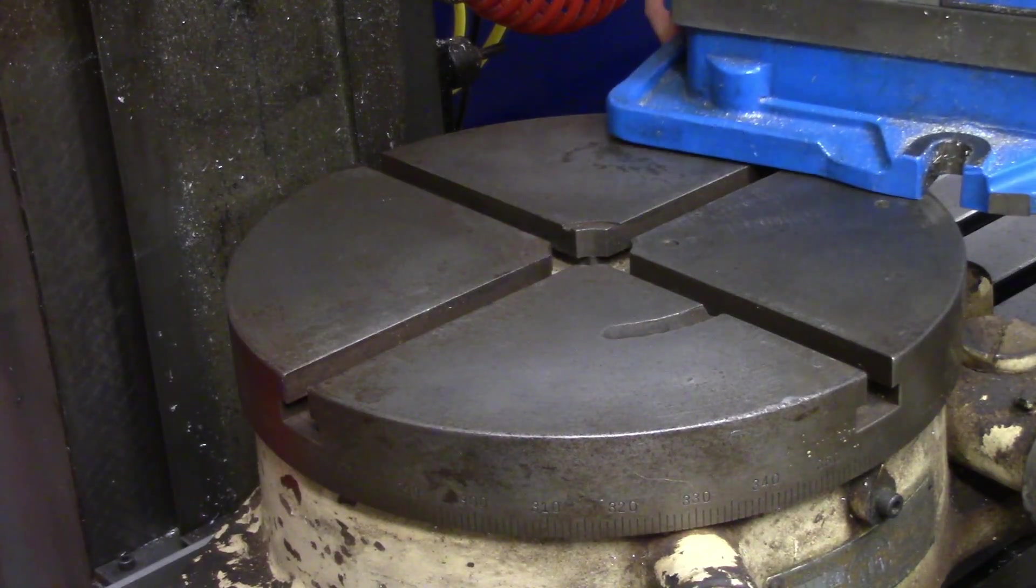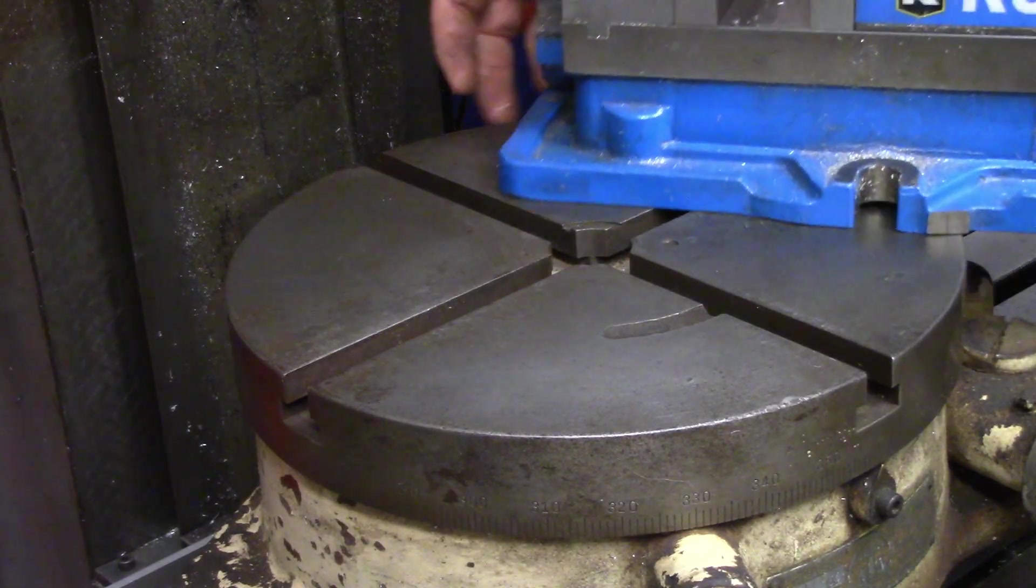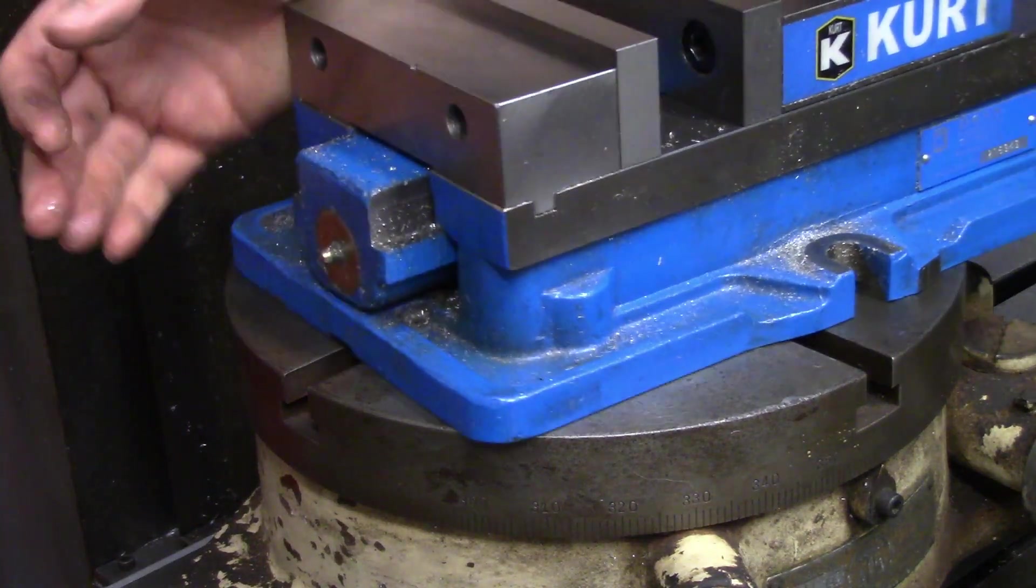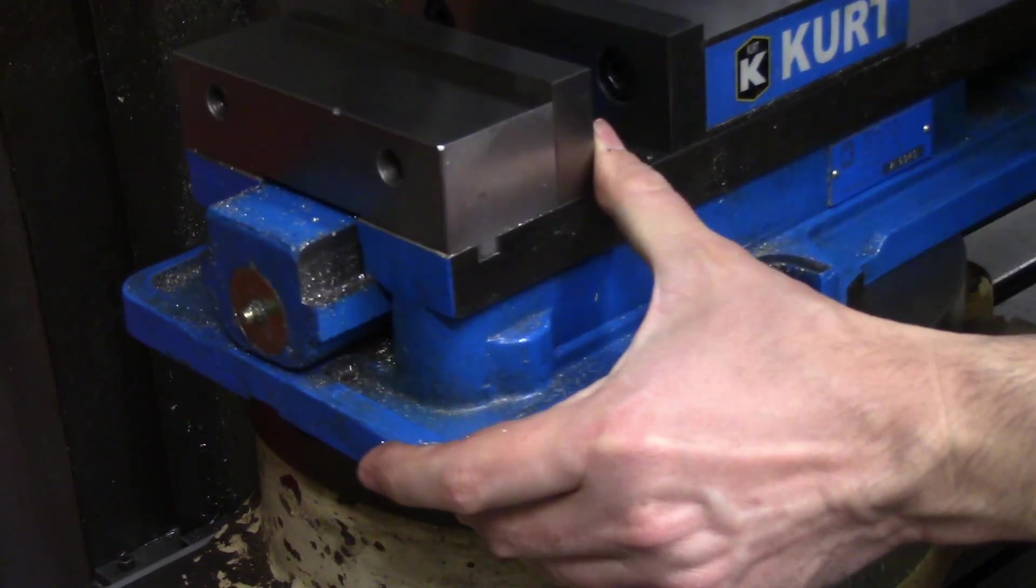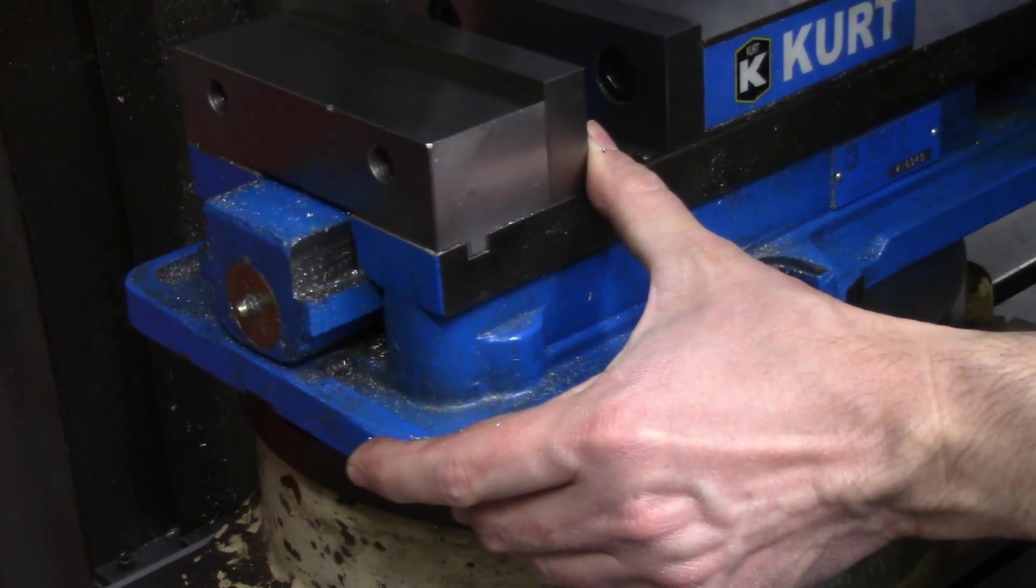Next up is my milling vice. Why? Be patient, young Padawan. All will be revealed in time. Compared to the weight of my rotary table, this thing is an easy lift. Practically like picking up a feather.